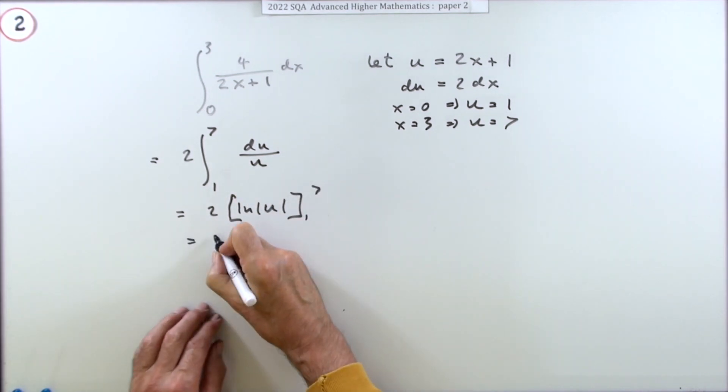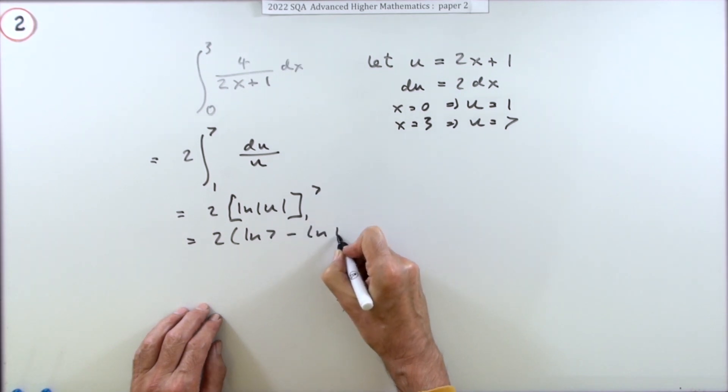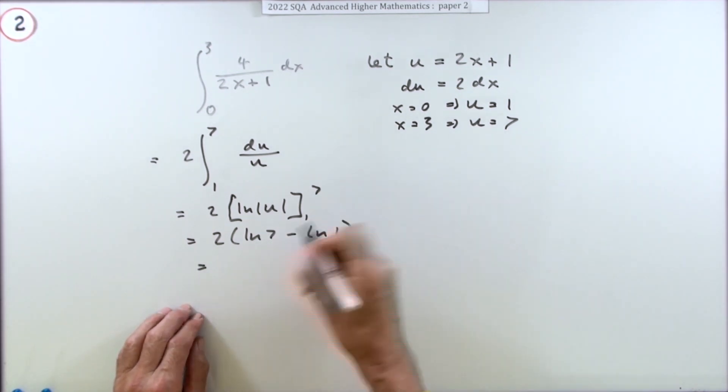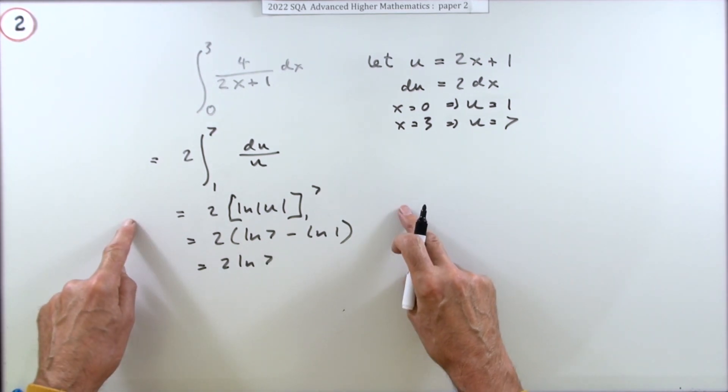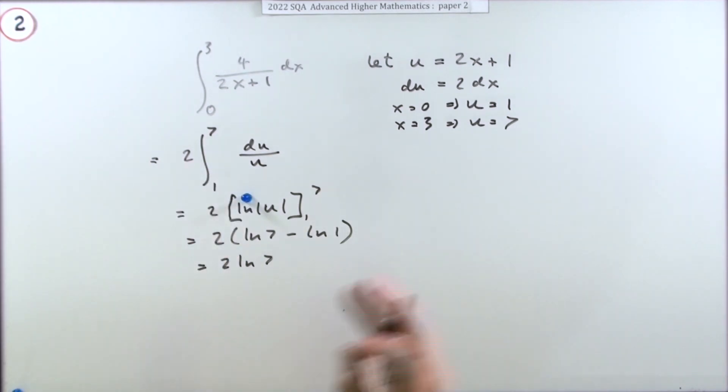So obviously you're going to get same as before - two ln seven minus ln one. Since that's zero that's just two ln seven. Doing it this way you don't get any marks for all of this. You don't get the first mark until you've identified the log, same as in the first one, and then the next mark is for getting the final answer.